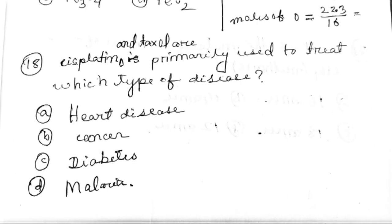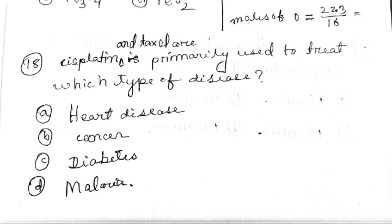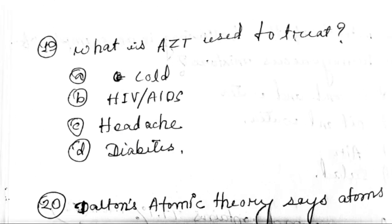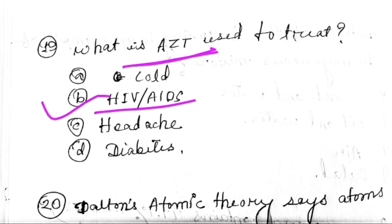Cisplatin and taxol are primarily used to treat which type of diseases? The next question is: What is AZT used to treat? AZT is used to treat HIV.